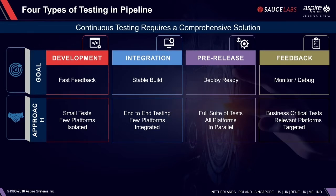Running those tests in parallel serves two purposes: speed and maximizing coverage for the application under test. Then there's the feedback phase, which involves continuous feedback through monitoring and debugging — including monitoring in production, pre-release, and across all other areas.